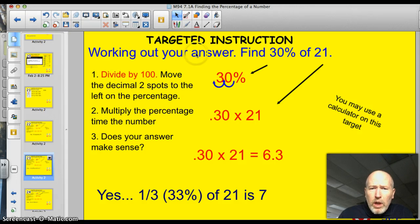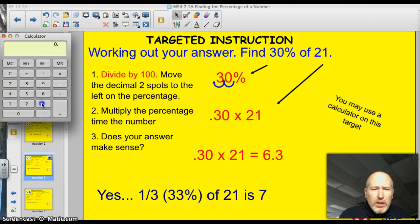All right. Our next problem. Work out your answer to this. Find 30% of 21. Same steps. We divide by 100, so we move that decimal place on the percentage two spots to the left. One, two. Our percentage has now become a decimal. We multiply that decimal times whatever number we're trying to work with, which in this case is 21. So, 0.3 times 21 equals 6.3. Here's my calculator hiding over here. So, 0.3 times 21 equals 6.3.